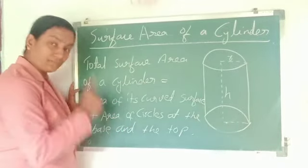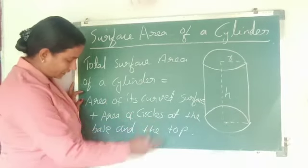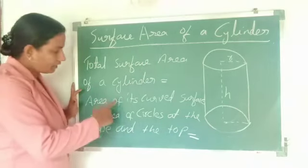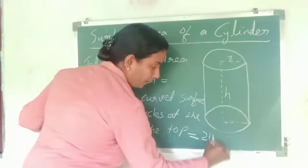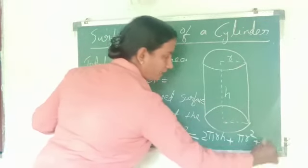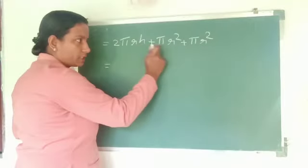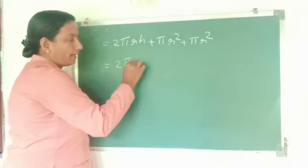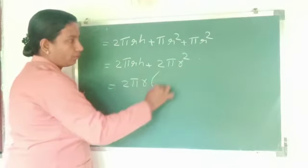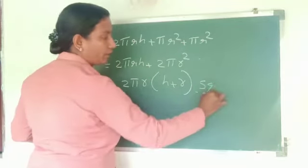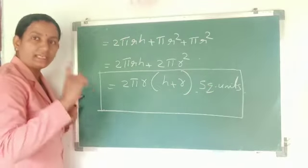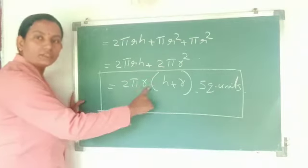Therefore, total surface area of a cylinder equals the area of its curved surface plus the area of the circles at the base and top. That is 2πrh plus πr² plus πr², which equals 2πrh plus 2πr². Taking 2πr as common: total surface area of a cylinder equals 2πr(h + r) square units.